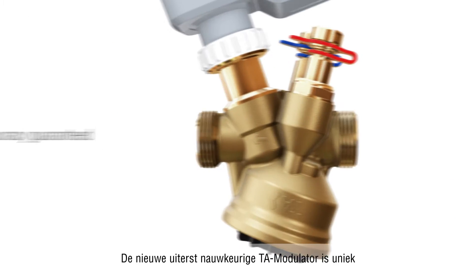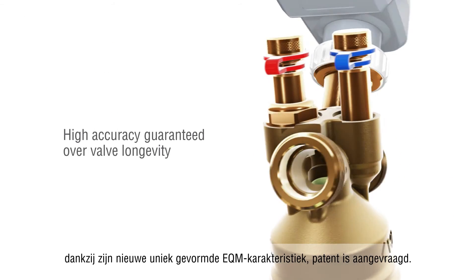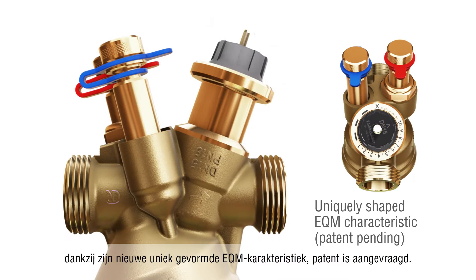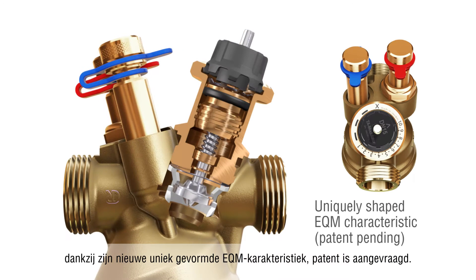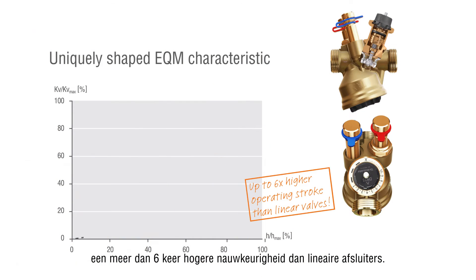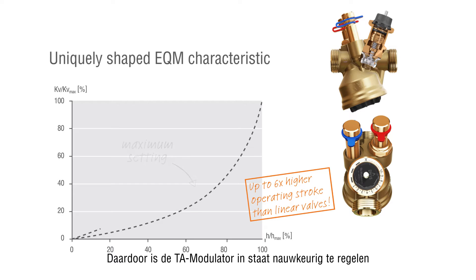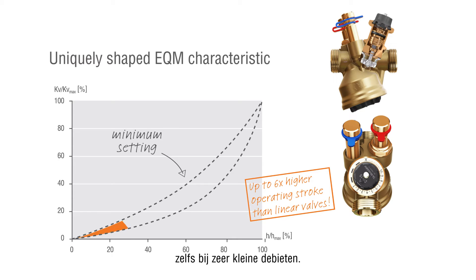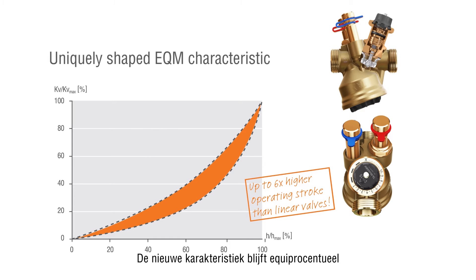The new highly precise TA Modulator is unique due to its new patent pending uniquely shaped EQM characteristic. Its uniquely shaped profile provides an up to six times higher operating stroke than linear valves. Therefore, TA Modulator is able to precisely control also very small flows. The new characteristic remains equal percentage within the range of maximum and minimum flow settings.